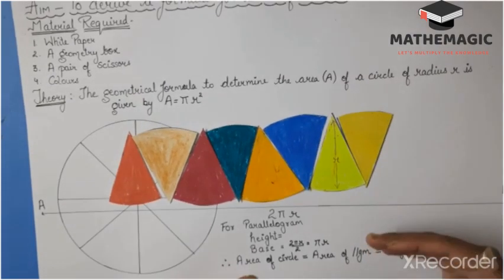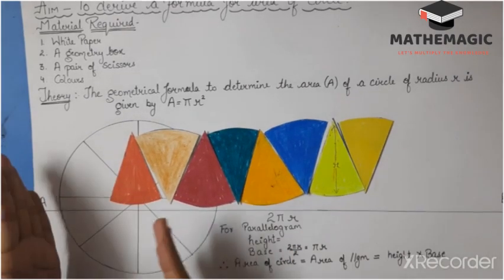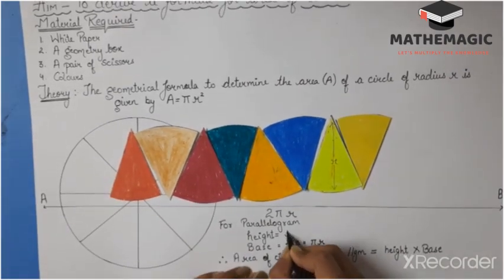The approximate height of this parallelogram is equal to the radius of the circle, which is r.